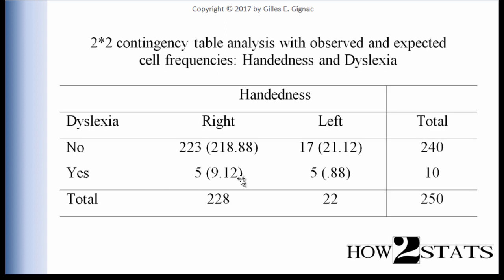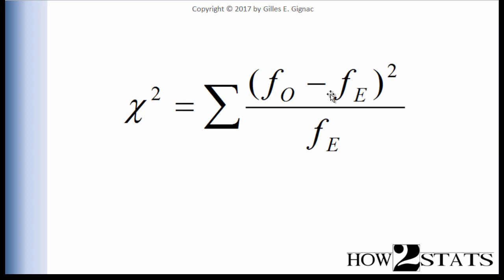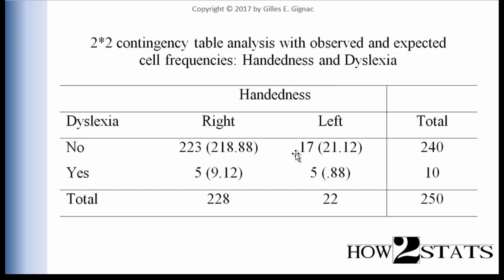Let's look at the full table with both observed and expected cell frequencies. 228 × 240 ÷ 250 = 218.88. It's true that you can't have a fraction of an observation, but analytically this is what it equals. So we expected 218.88 observations in this cell, but we actually saw 223 — there is a difference. That difference, going back to the formula, is the observed minus the expected frequency, calculated for each of the four key cells.